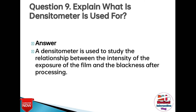Question 9: Explain what a densitometer is used for. Answer: A densitometer is used to study the relationship between the intensity of the exposure of the film and the blackness after processing.